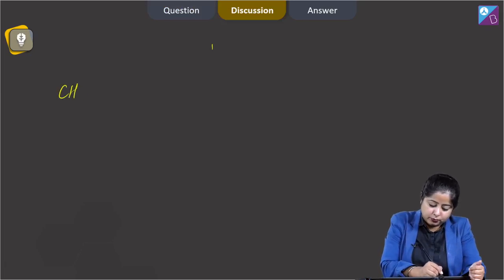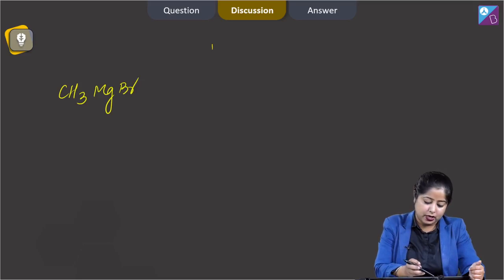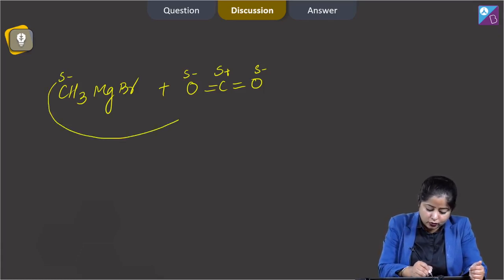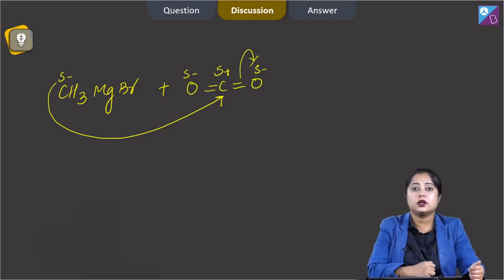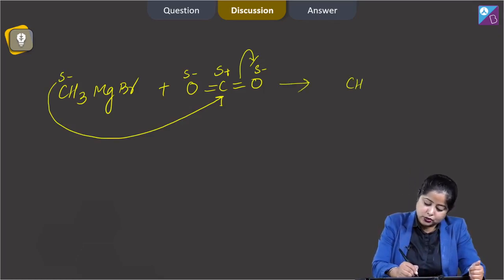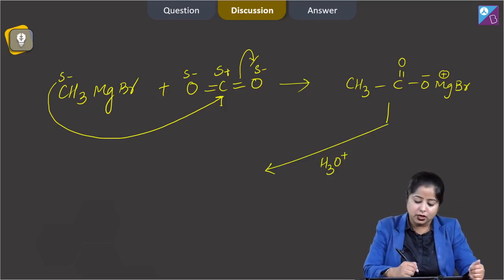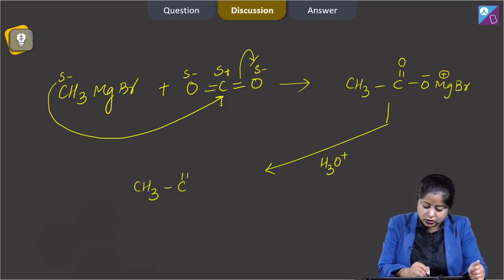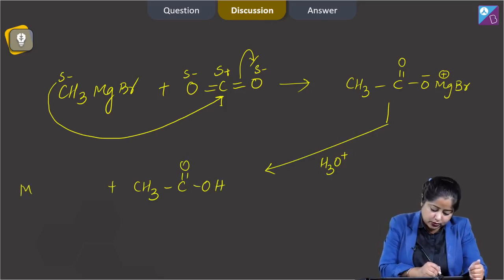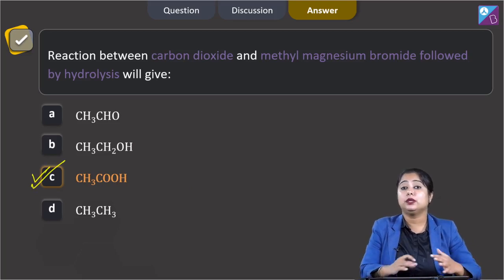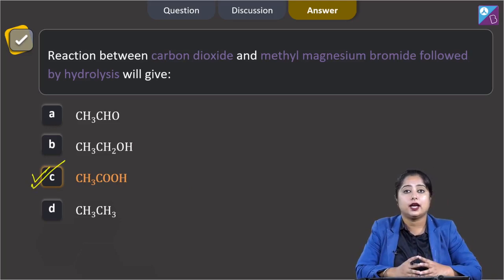Let us start the reaction. We are given methyl magnesium bromide, CH3MgBr. This reacts with CO2. This carbon will attack on this carbon and this pi bond will shift towards oxygen. The products obtained will be CH3C=O-O-MgBr. This on acidic hydrolysis, that is on reaction with hydronium ion, forms ethanoic acid CH3COOH and the side product is Mg(OH)Br. That means the correct answer is option C. Ethanoic acid is obtained when methyl magnesium bromide reacts with carbon dioxide followed by acidic hydrolysis.